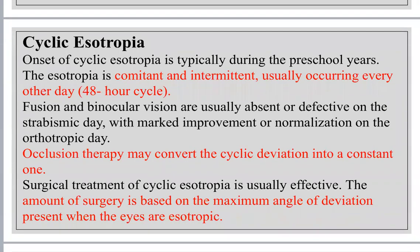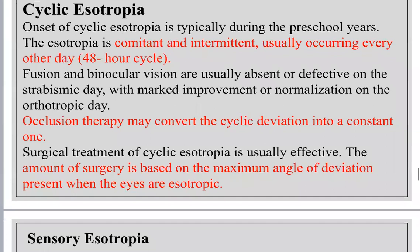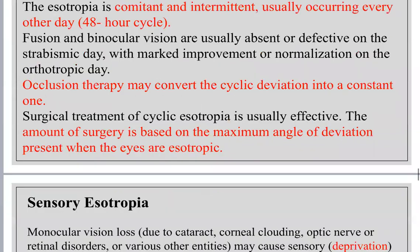Cyclic esotropia is extremely important in questions. It is concomitant and intermittent — one day orthotropic, one day esotropic — cycling every 48 hours. Occlusion is contraindicated because it may convert the cyclic deviation into a constant one. Functions on the orthotropic day are excellent, and amblyopia is unlikely because of the orthotropic day.